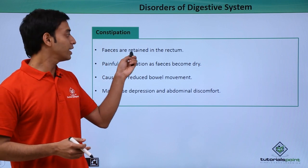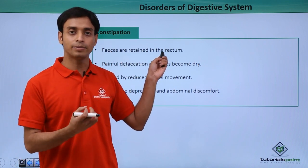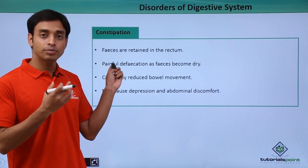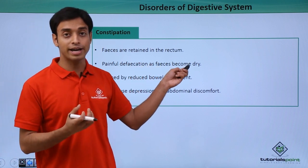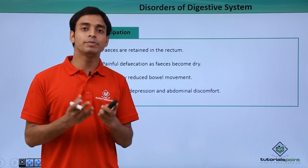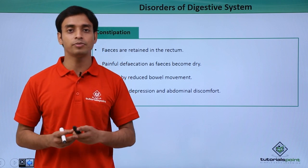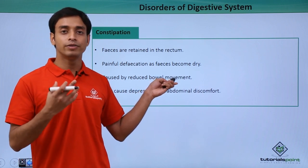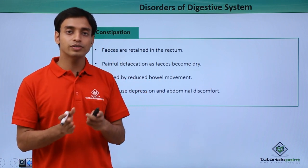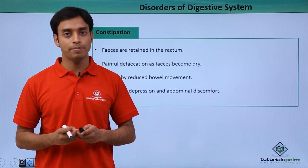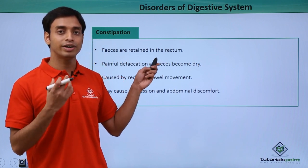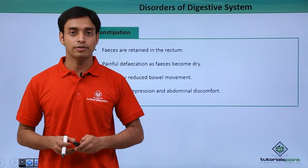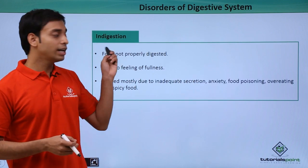The next type is constipation. Here the feces are retained in the rectum and cannot come out through the anal area, causing painful defecation as the feces become dry. This dryness is due to excessive absorption of water from the feces, caused by reduced bowel movement. It can also cause depression and abdominal discomfort.